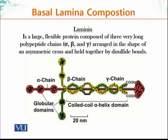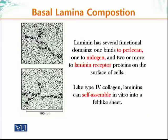Laminin is a very important component of basal lamina — it is a large, flexible protein made up of three different long polypeptide chains: the alpha chain (red), the gamma chain (yellow), and the beta chain (green). This forms an asymmetric cross shape held together by disulfide bonds. There is also a coiled-coil alpha-helical domain and multiple globular domains that play important roles in cell adhesion.